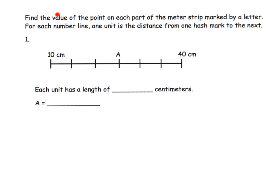Here we're being asked to find the value of the point on each part of the meter strip. For part A, one unit is the distance from one hash mark to the next. Going from this hash mark all the way to this hash mark is a distance from 10 centimeters to 40 centimeters — so that's a distance of 30 centimeters. We need to figure out how much each unit equals, and we know they're always going to be the same jump.